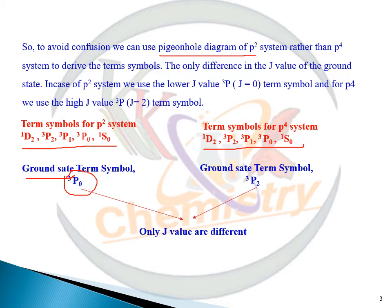According to Hund's rule, if a subshell is more than half filled, then you will have to choose a term with highest multiplicity, higher L value, and higher J value. And for a system which is less than half filled, you will choose the ground state term symbol having highest multiplicity, higher L value, and lower J value.